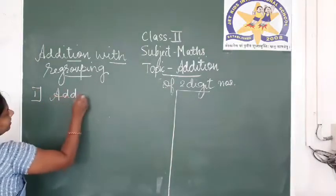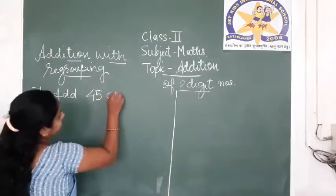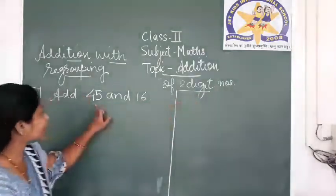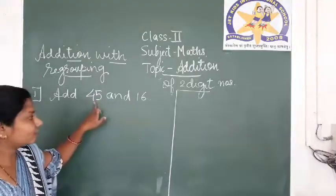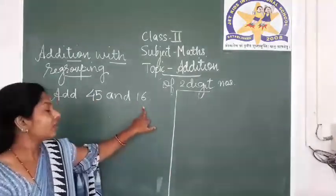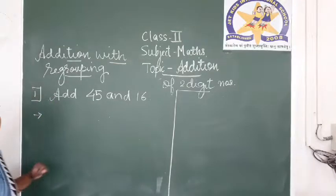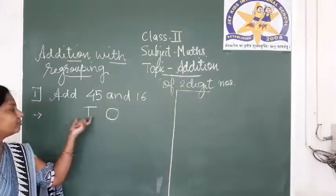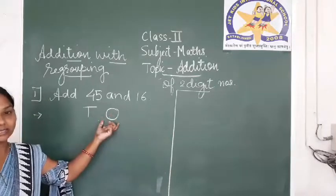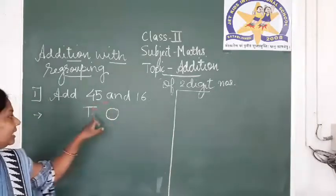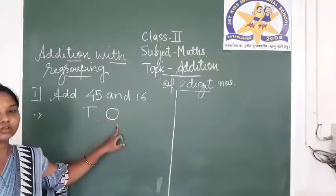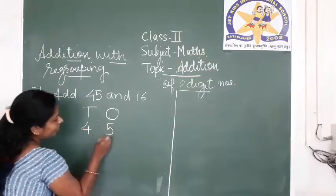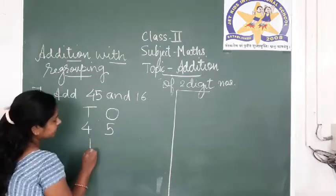Add 45 and 16. As we are learning addition of two digit numbers, both 45 and 16 are two digit numbers. First step: make the place values — make the vertical columns of tens and ones. We are adding two place values, tens and ones, so we made two vertical columns. Second step: arrange the numbers in the vertical columns — 45 and 16. Give the addition sign.